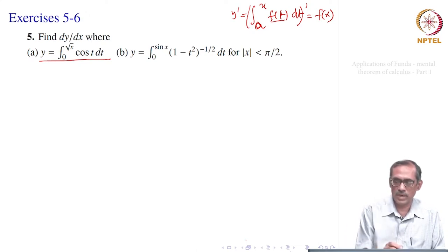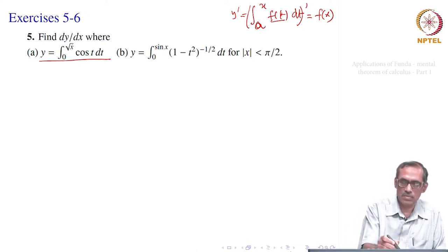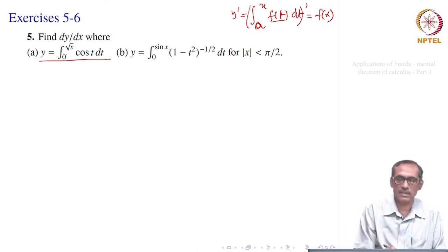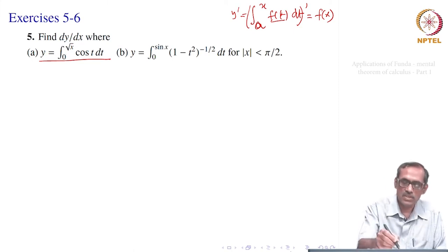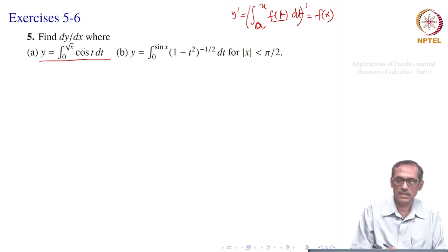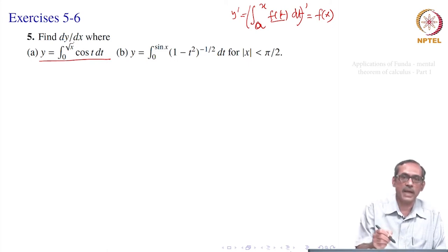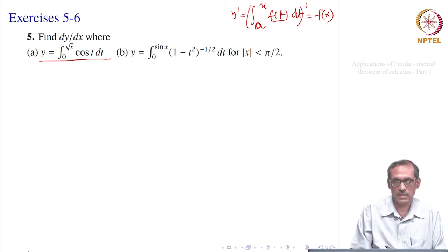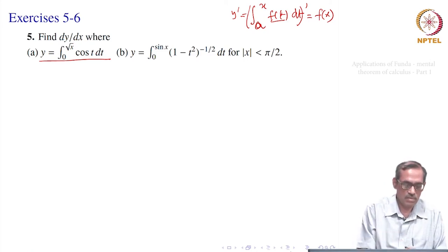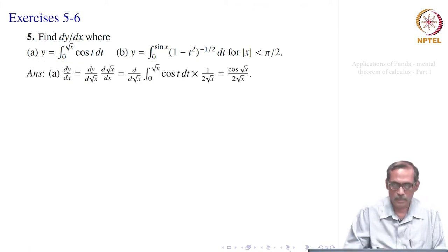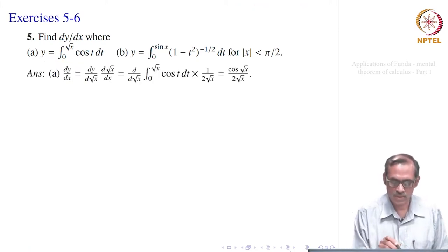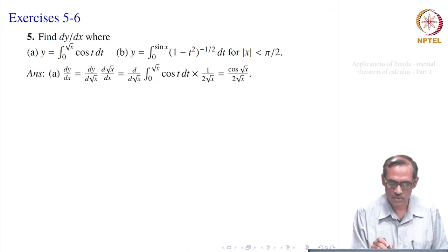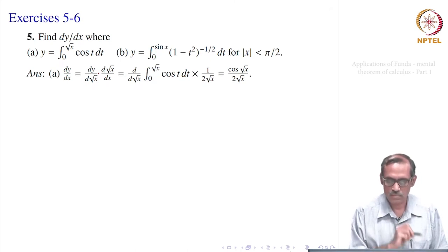But it is not in the form a to x; it is 0 to root x. Of course, we can take that constant to be 0. The problem is we want dy by dx, but it is 0 to root x. If you take dy by d(root x), then straightforwardly we will go for cos(root x). So, you use the chain rule; apply chain rule here. Now, dy by dx is dy by d(root x) times d(root x) by dx.